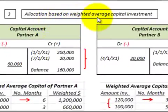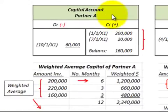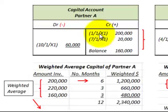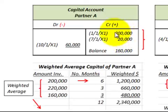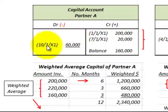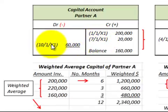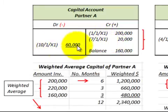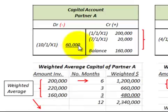Now let's look at an allocation based on the weighted average capital investment, using the same capital accounts for partner A and partner B. We have to look at what amount of capital was carried for each period. On 1/1/X1, $200,000 was invested. On 7/1/X1, $20,000 more was invested, so for six months we had $200,000. Then it was increased to $220,000. On 10/1/X1 it was reduced by $60,000, so from 7/1 to 10/1 — three months — we had $220,000 invested. From 10/1 to year end, that's $160,000 for the last three months.